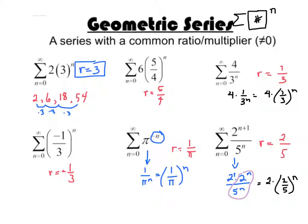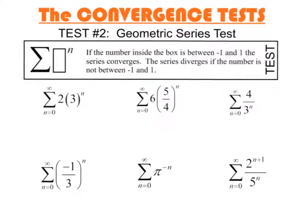So then the question is, how do we know if the geometric series converges? This is the convergence test for a geometric series. If the number inside — that ratio — is between negative 1 and 1, the series converges. The series diverges if the number isn't between negative 1 and 1.